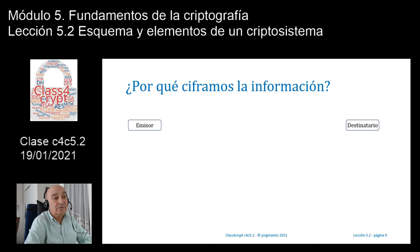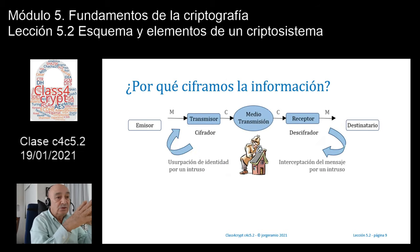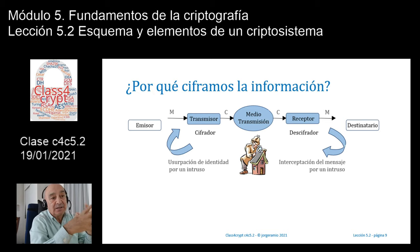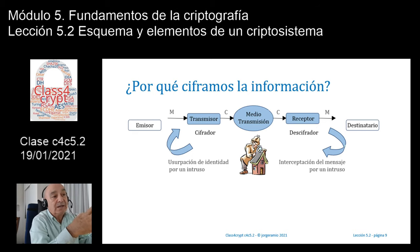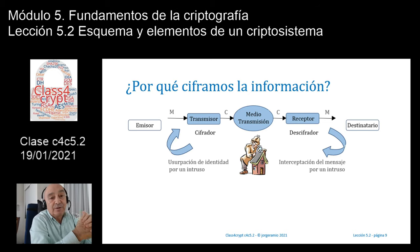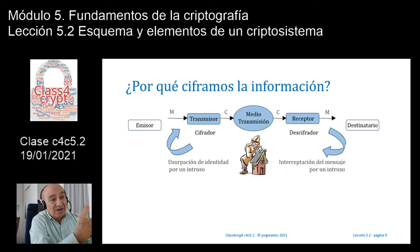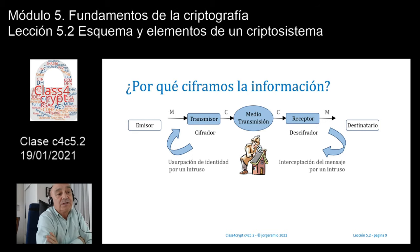¿Por qué ciframos la información? Si tenemos un extremo emisor y un extremo receptor o destinatario y queremos enviarle un mensaje de forma confidencial, dado que el medio de transmisión —ese canal por el cual vamos a enviar información— es por definición inseguro, debemos asegurarnos de que ese destinatario sea la única persona que pueda recibir esa información. Por ello, no nos queda otra solución que cifrar el documento, ese mensaje M, de forma tal que en el canal todo el mundo pueda ver algo sin sentido, excepto el destinatario, que tendrá una clave con la cual podrá descifrarlo.